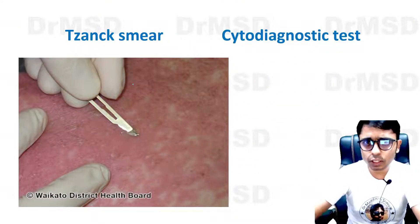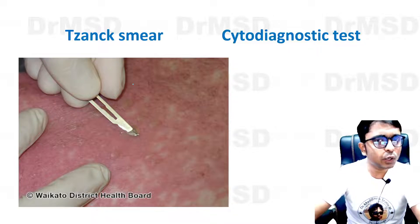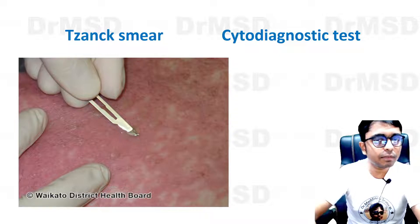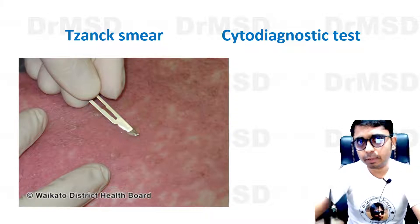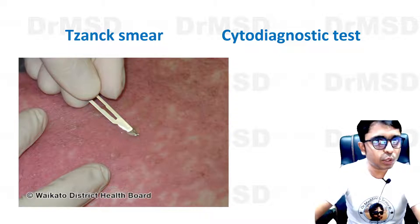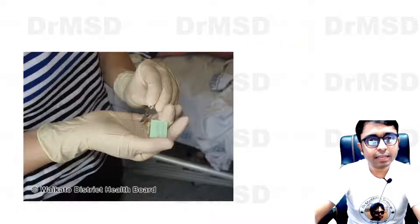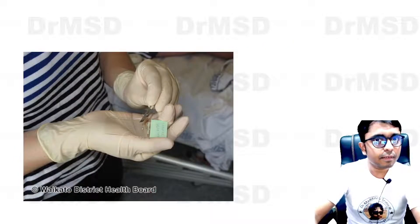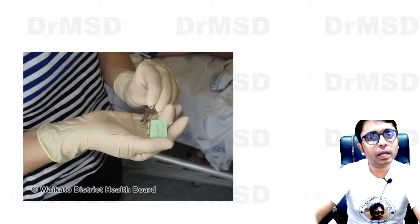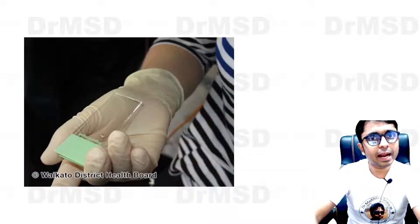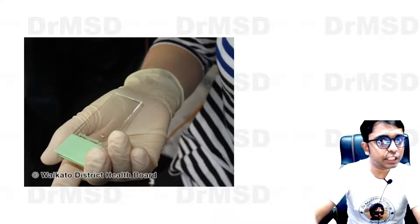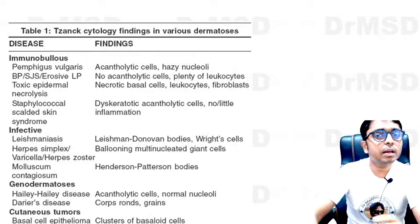We will deroof the vesicle with the help of a scalpel, and with the blunt end of the scalpel we will scrape the base of these erosions. Then we will fix this over a glass slide and apply Giemsa stain.